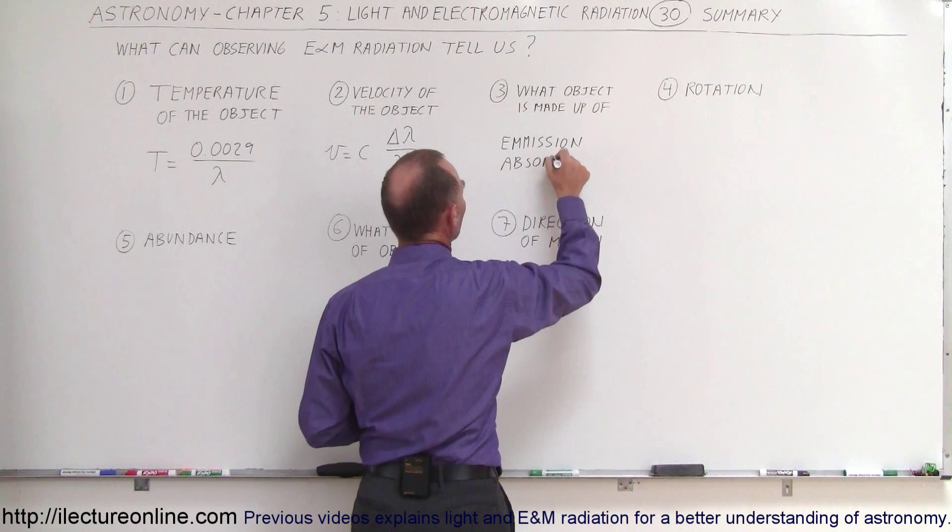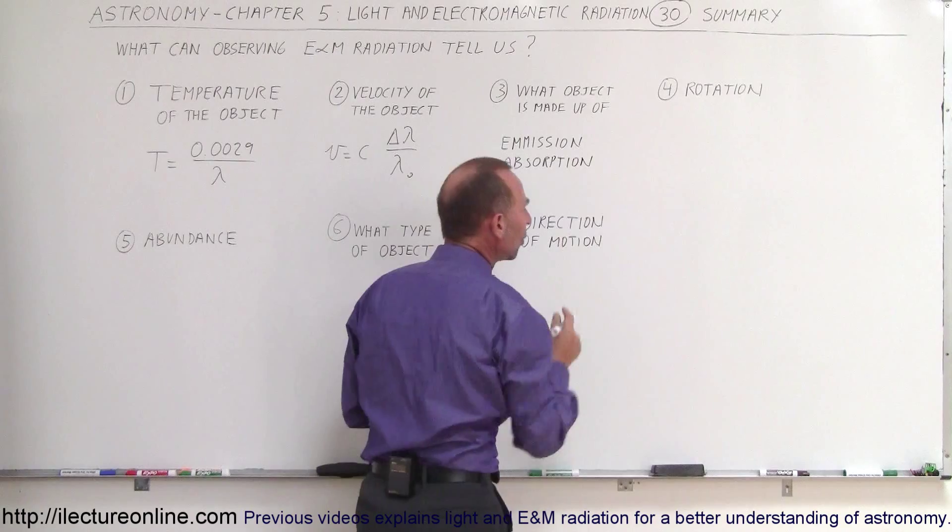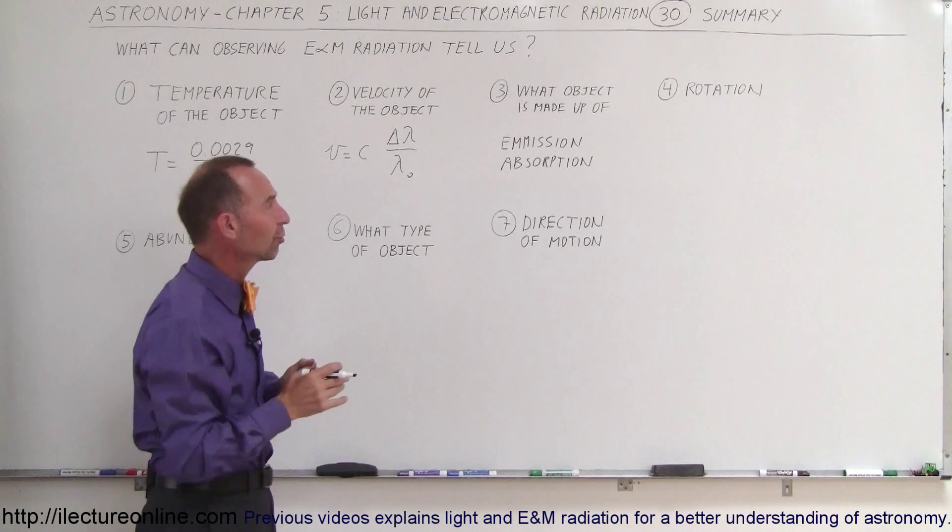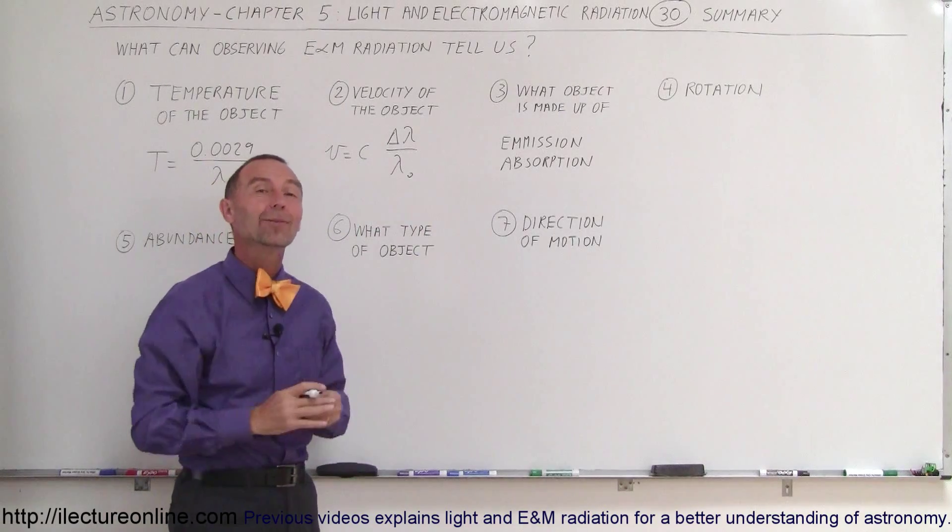In the case of stars, we have to look at the absorption spectrum, and we can see which wavelengths are missing. We then pair them up with the elements that we know of from our laboratory experiments, and we can determine those are the elements that are on that star.